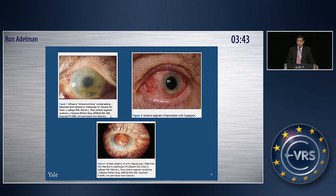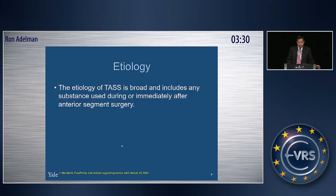These are some examples of TASS: limbus-to-limbus corneal edema, and we may have hypopyon. In the later phases, the pupil may be enlarged and non-responsive.